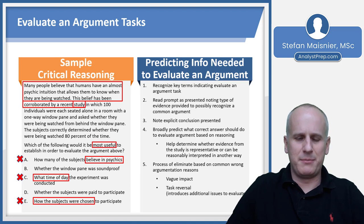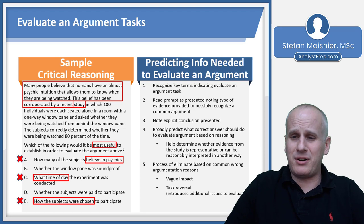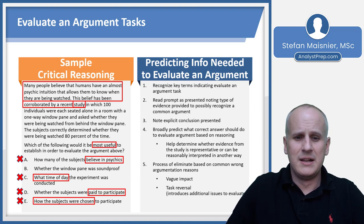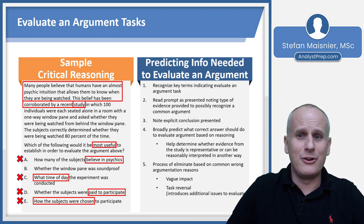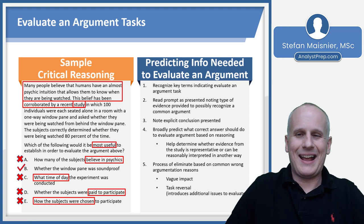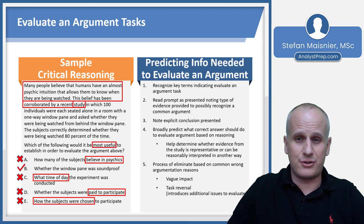Choice C — what time of day the experiment was conducted — introduces more questions than answers, so it can't help evaluate the conclusion. Choice D — whether subjects were paid to participate — might explain why they participated but doesn't explain how they determined they were being watched. Choice B asks whether the windowpane was soundproof. If it wasn't soundproof, subjects might have heard the person behind it, meaning they weren't relying on psychic intuition but on auditory cues. That's how evaluate argument correct answers work: the outcome differs depending on the answer to the question presented. The correct answer is B.